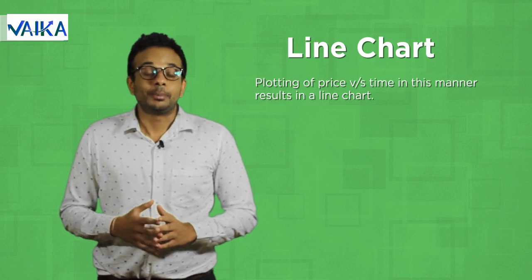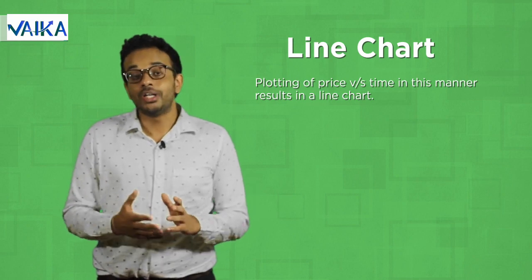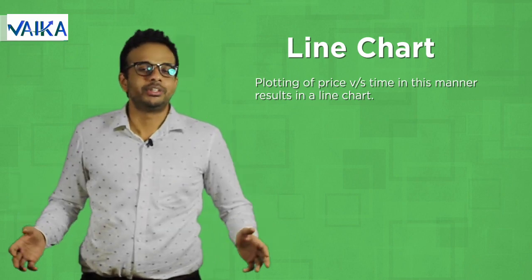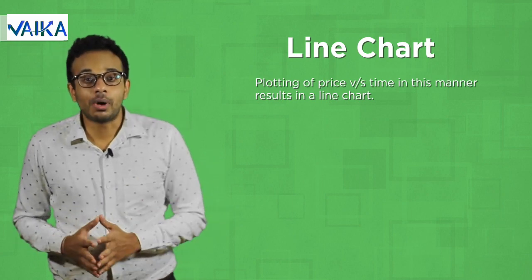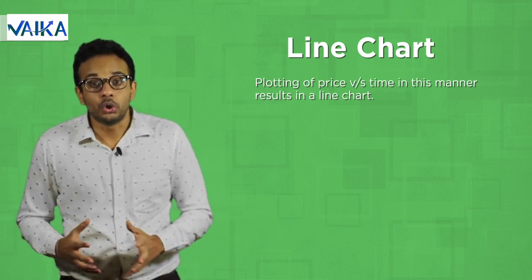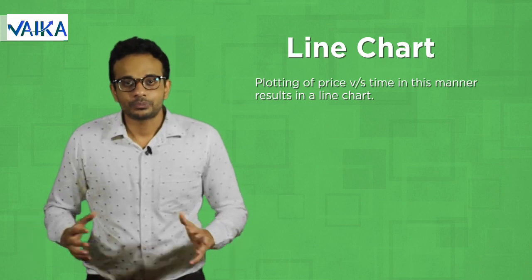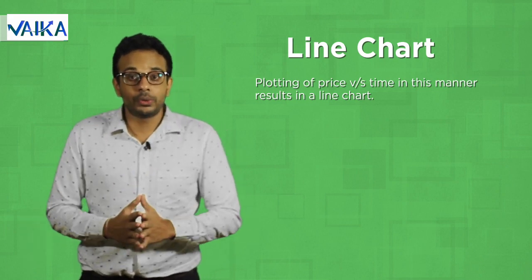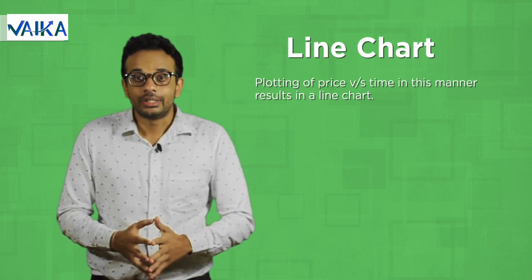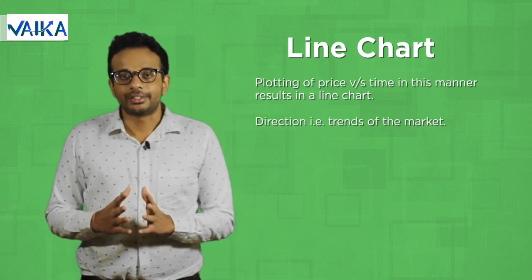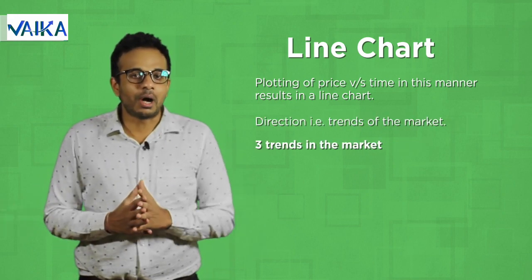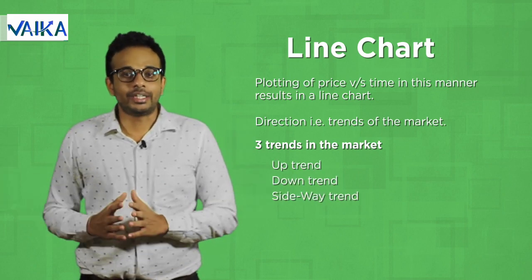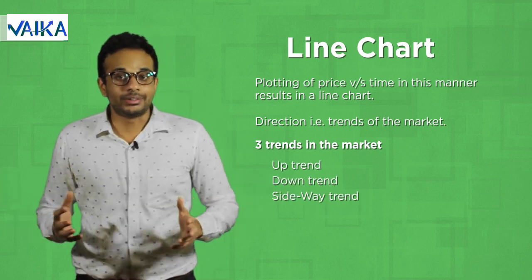In the stock markets, prices keep on moving up and down. Just like we get lost without a direction in life, even in the stock markets it is important to know where the prices are heading. Hence, the first aspect we'll talk about is directions, i.e. trends of the market. There are three trends in the market: uptrend, downtrend, and a sideway trend.